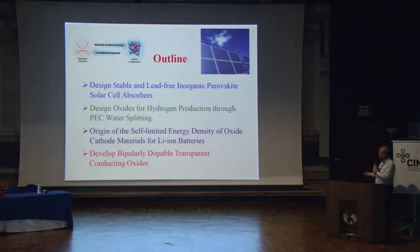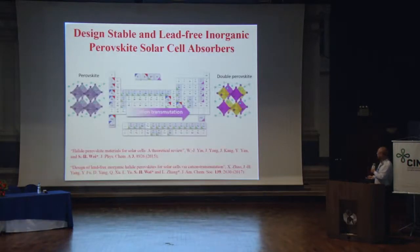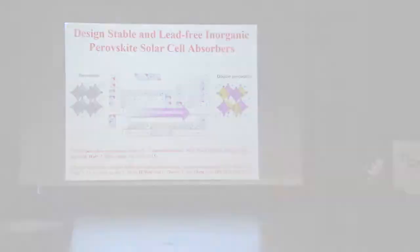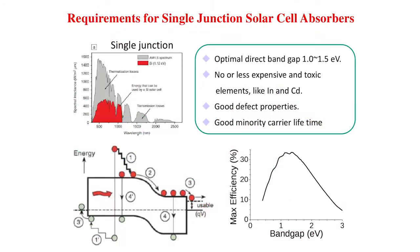I'll give you some examples about how we think when we do material design. The first example is designing stable and lead-free inorganic perovskite solar cell absorbers.